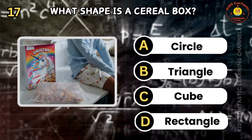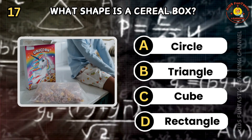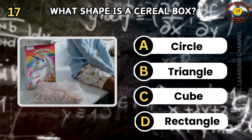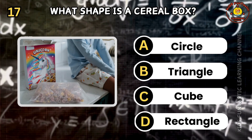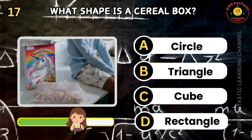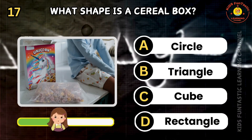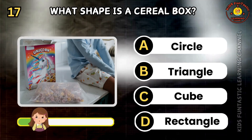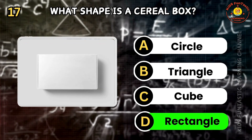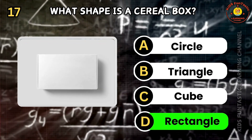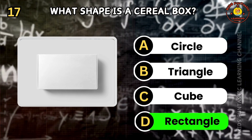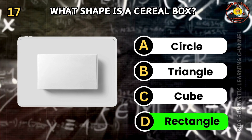Question 17. What shape is a cereal box? A: circle, B: triangle, C: cube, D: rectangle. Way to go! The correct answer is D. A cereal box is typically in the shape of a rectangle.